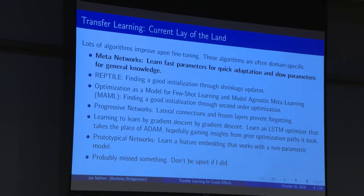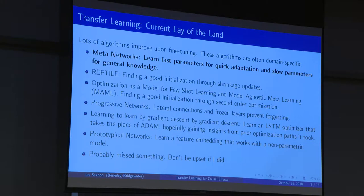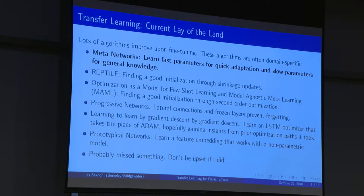Here's the lay of the land in transfer learning. One approach is meta-learning or meta-networks: some things are going to be stable across many tasks — like running experiments in five different states where there are stable features across those states and time periods — while other things are more local and move around depending on the year or the state. So you end up with algorithms that set up different learning rates for stable things you want to learn slowly and things you want quick adaptations for.